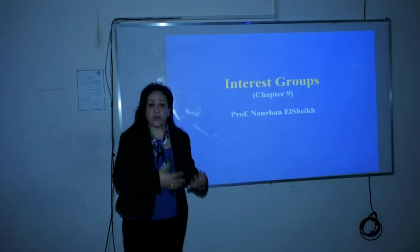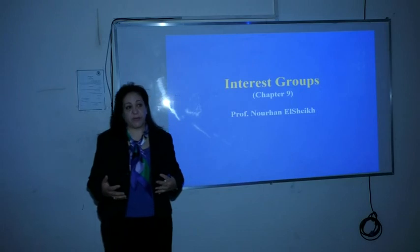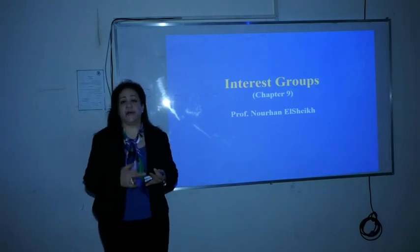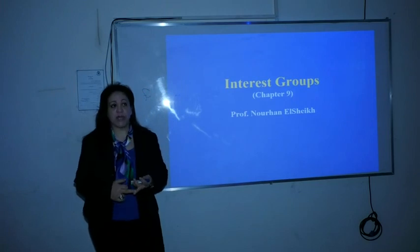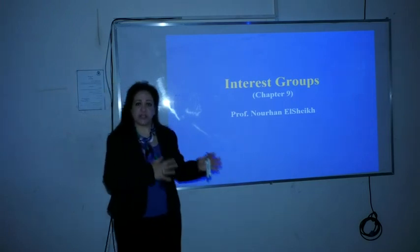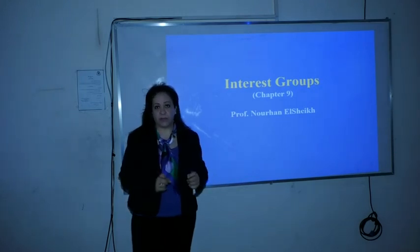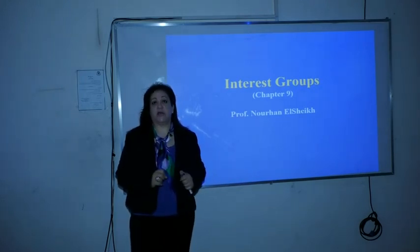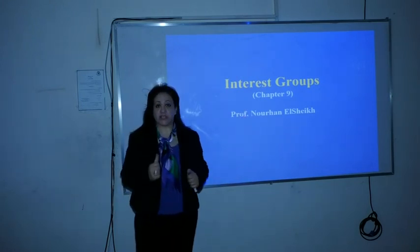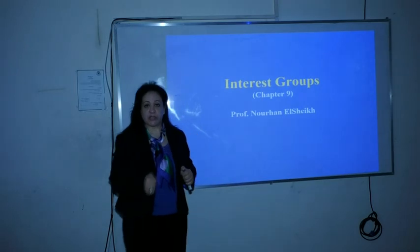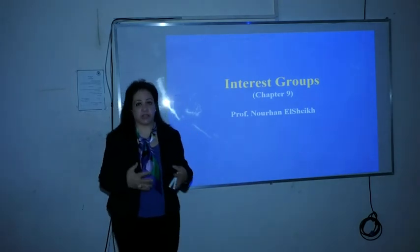According to those relations, we differentiate between three main types of government: the presidential, parliamentary, and semi-presidential systems. We started last time discussing informal institutions, which include political parties and interest groups. Last time we mentioned political parties — their definition, types, etc.